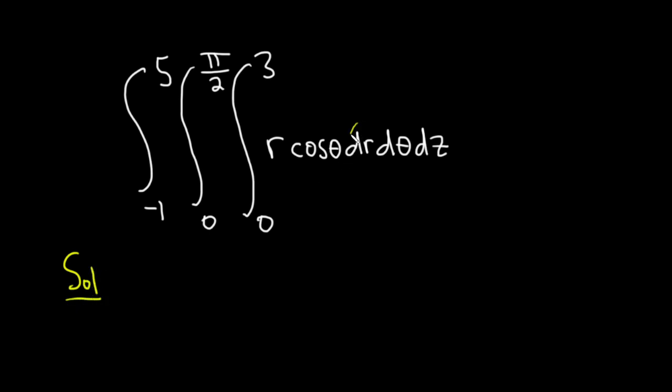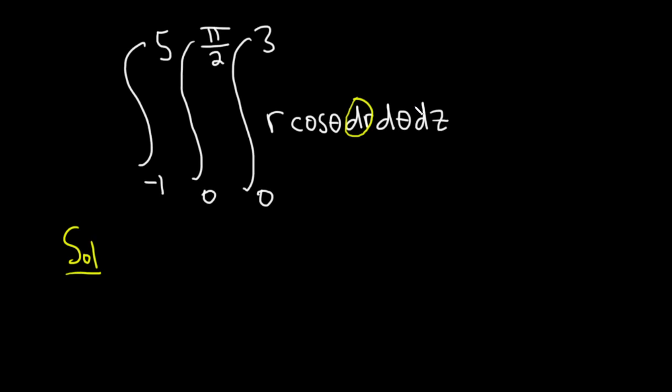So we'll start by integrating with respect to r because the dr is written first. When we do that we treat the theta as a constant. So cosine theta we're just going to pretend it's constant throughout the computation.